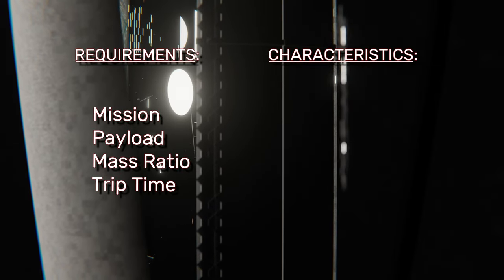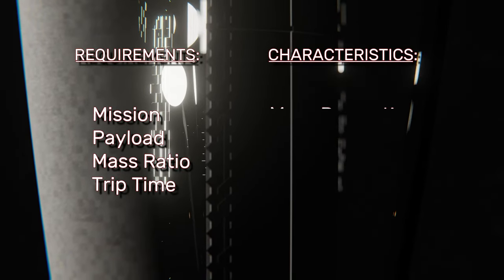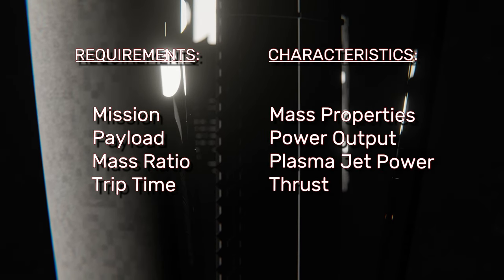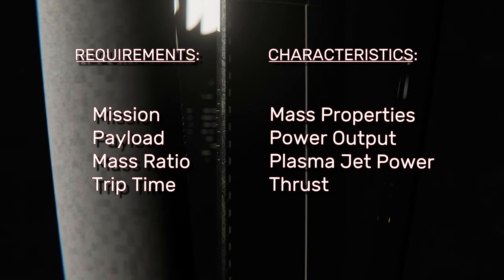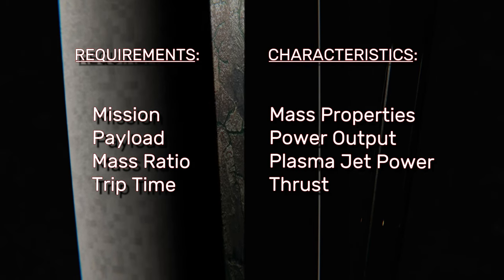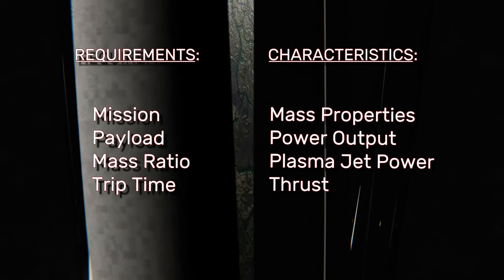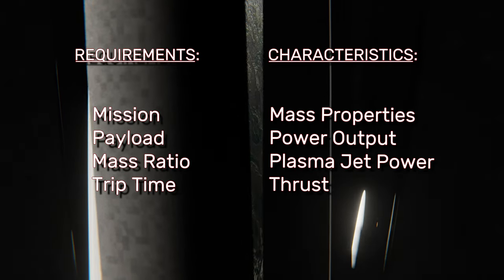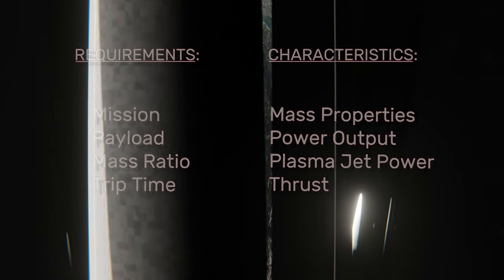Unique characteristics of fusion engines include mass properties of the vehicle, power output, plasma jet power, and thrust. These can vary significantly depending on the design. The goal is to maximize the efficiency of energy conversion from a power plant to the plasma jet, then into thrust. Each step along this process, of course, introduces inefficiencies.